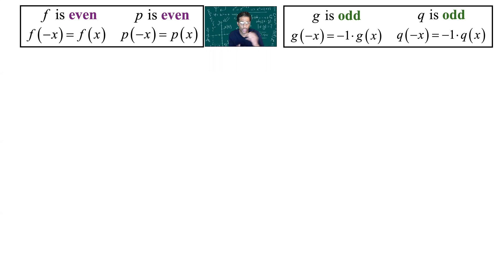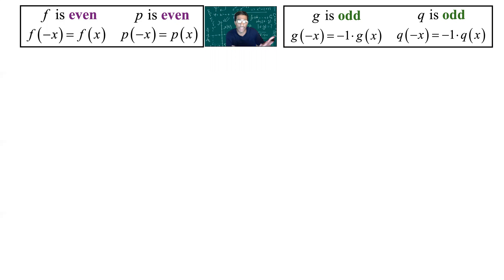An even function is one in which you put in negative x to replace x, and what comes out is just the original function. An odd function is where when you put in negative x to replace x, what comes out is negative 1 times the original function. An even function is symmetric with respect to the y-axis; an odd function is symmetric with respect to the origin. An example of an even function is y equals x squared, or y equals cosine x. An example of an odd function is y equals x cubed, or y equals sine of x.